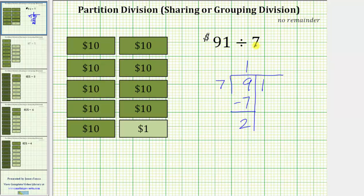But because we cannot share the two $10 bills equally among the seven friends, we now perform an exchange. We exchange these two $10 bills for twenty $1 bills. And because we already have one $1 bill, we now have a total of 21 $1 bills.